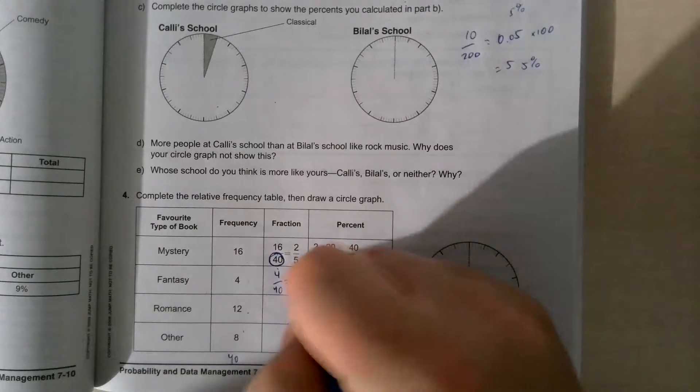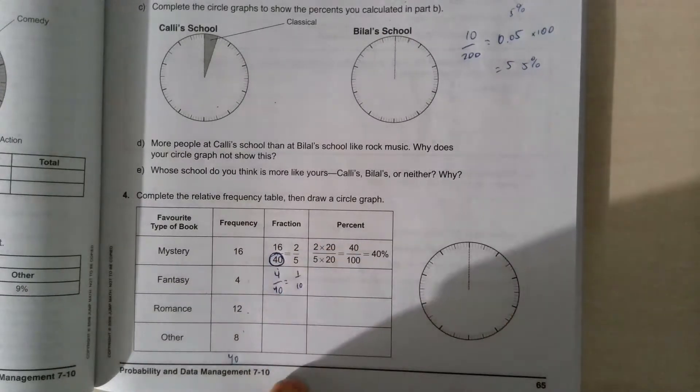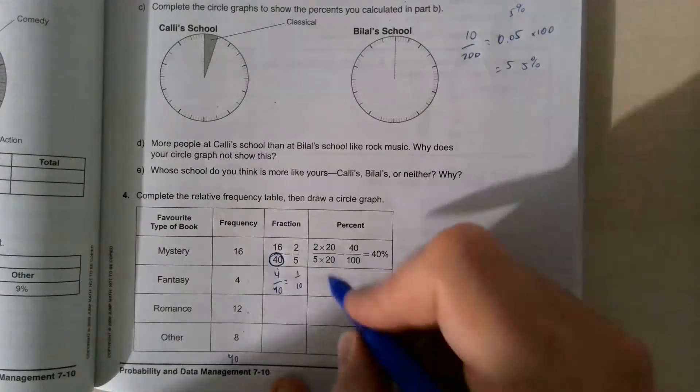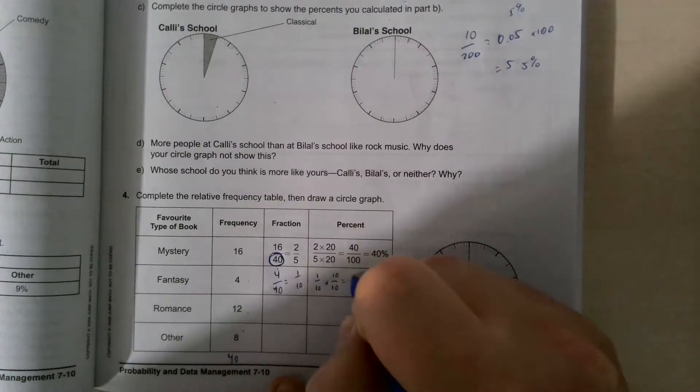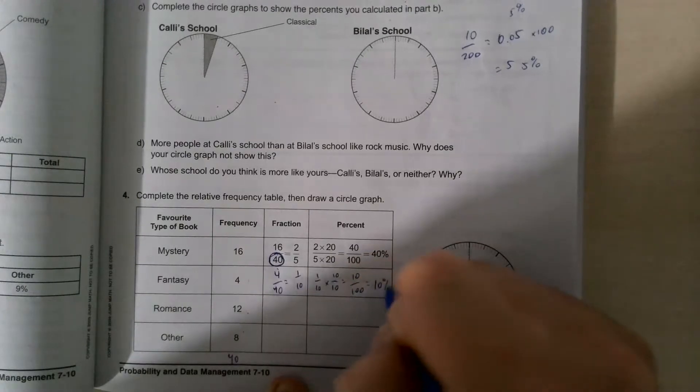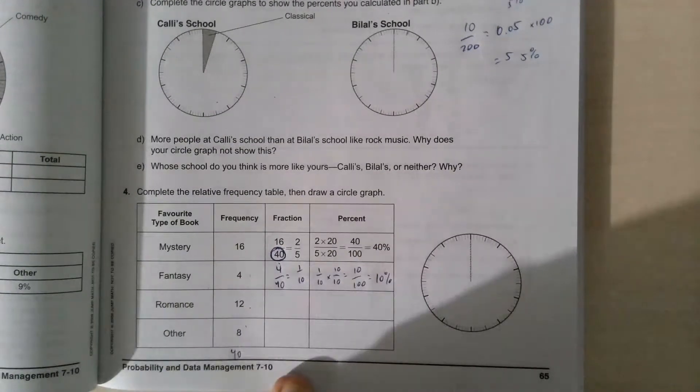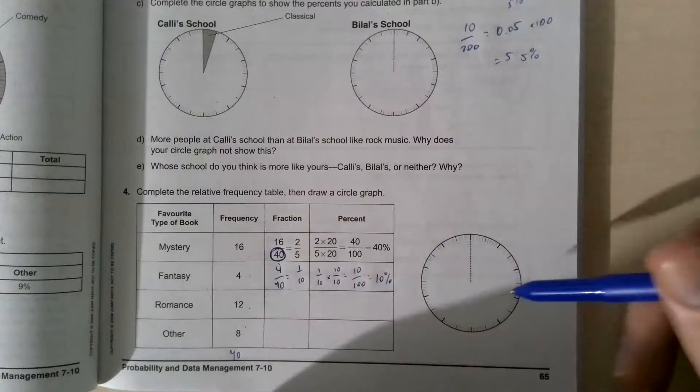Both these numbers can be divided by 4. So we put 1 over 10. And now what is 1 over 10 as a percentage? Well, we times both of these by 10. And that gives us 10 over 100, which equals 10%. And that's what they're asking us to do. And then we'd have to create our table from there.